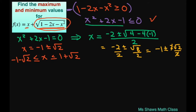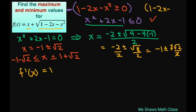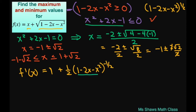The x from the first term really doesn't matter because it can be anything. Now that we have the domain established, we can go ahead and differentiate our function. So let's find f prime of x. The derivative of x is just 1. This square root piece can be written as 1 minus 2x minus x squared to the power of one half. Using the chain rule, we get plus one half of 1 minus 2x minus x squared to the power of negative one half, times the derivative of the inner function, which is negative 2 minus 2x.